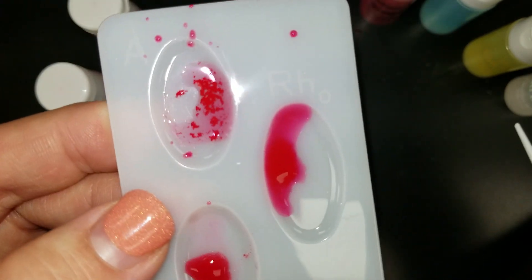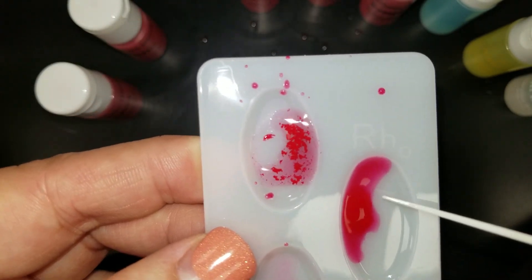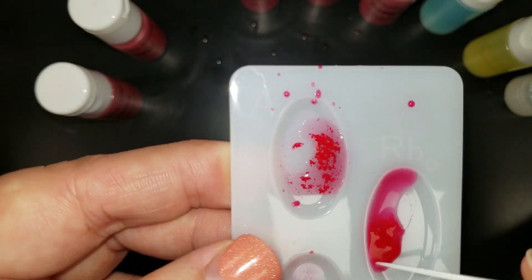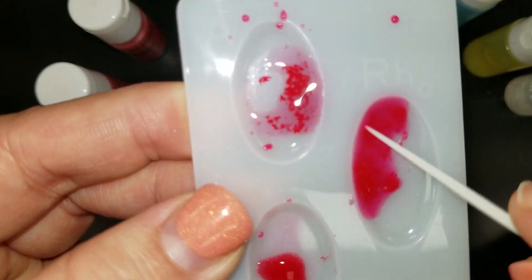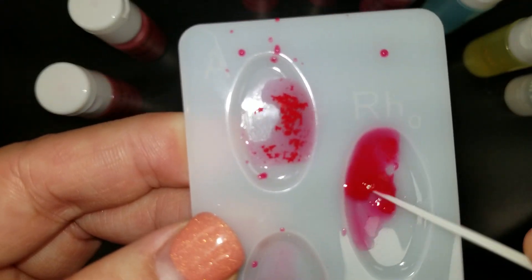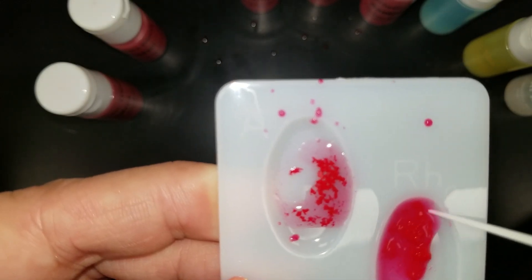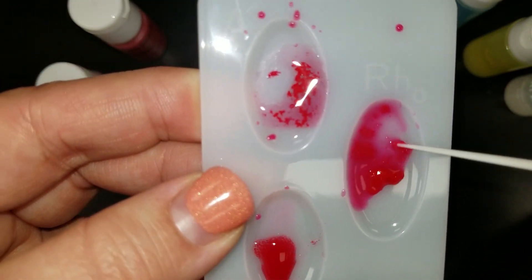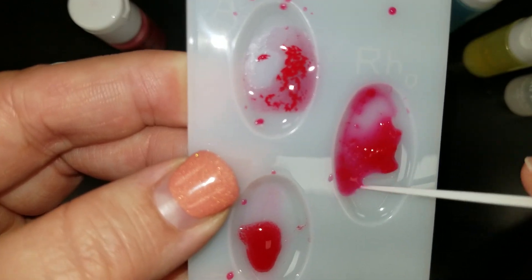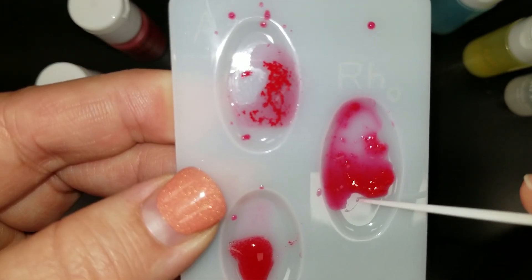Now I'm going to do my last antigen over here, the Rh, and what's really groovy about this stuff is it almost becomes like jello. So notice when I mix this up, it's all clumpy, and it's become sort of like a little melted jello. That's what a positive for Rh looks like.